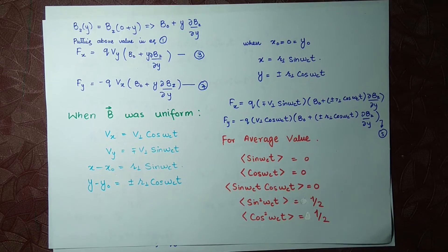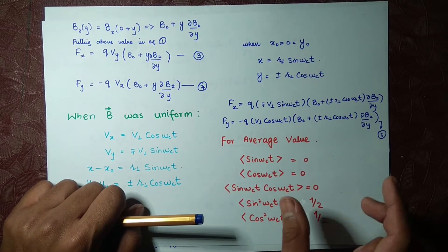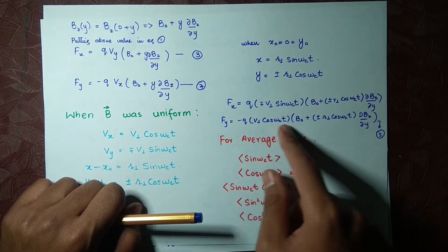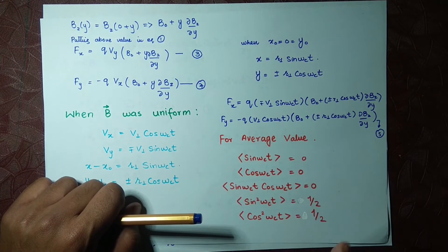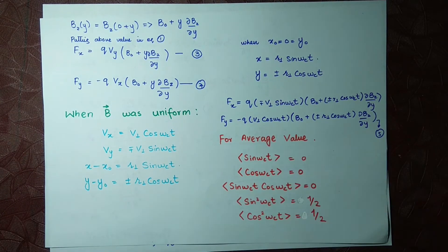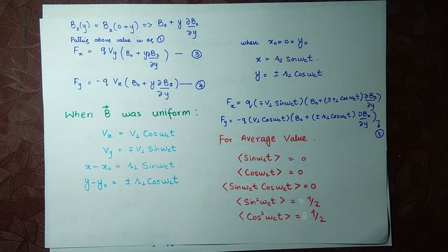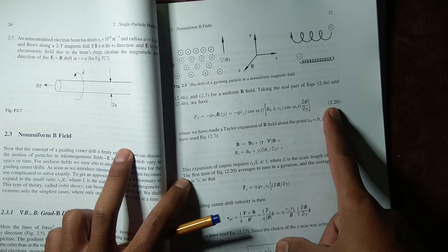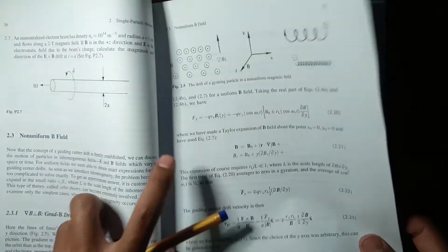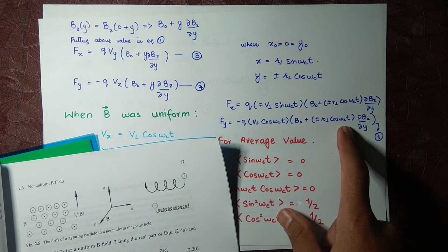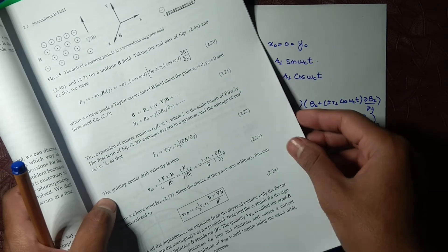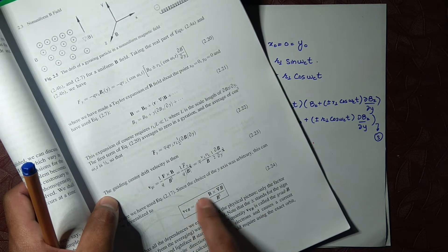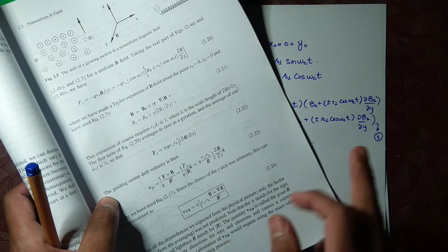Welcome back to Learn Daily Physics. In the previous lecture we derived equation 2.20 in F-san. You can see it on your screen — this is equation 2.20 we derived in our previous lecture. Now we are going to find the next equation, so let's start the calculation.